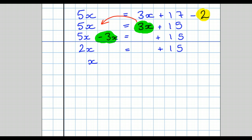Then to finish, we take the coefficient — that's the number in front of the letter — and put it underneath the other number. So x equals plus 15 all over 2. The number 2 that was the coefficient of x now becomes the denominator of our answer.